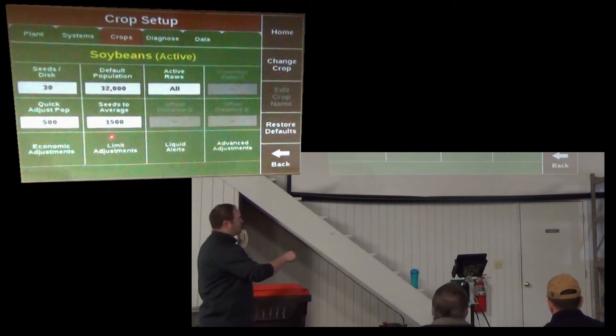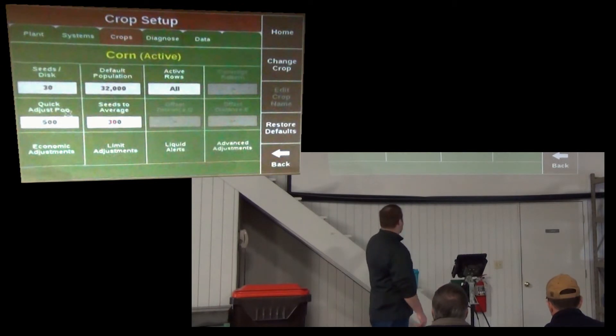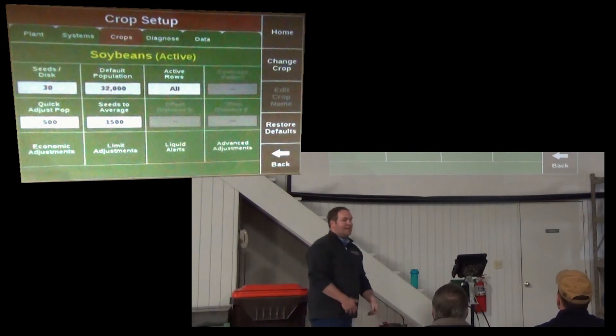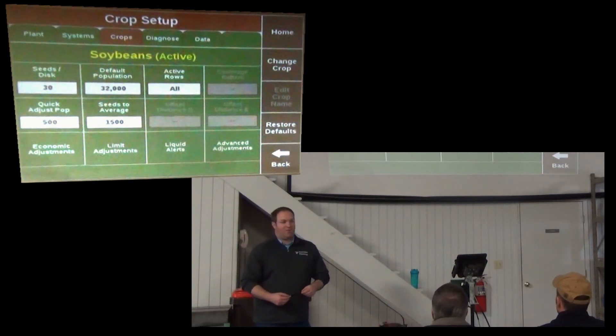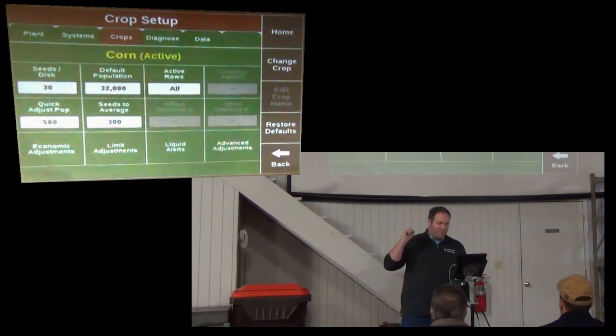So on this crop tab, under setup and then crop, the seeds to average - now, if I go to corn, that's at 300. I change crop to soybeans, 1,500. So roughly 10% of my population. So that one, if you leave that at 300 on soybeans, your population is just going to constantly be jumping around.